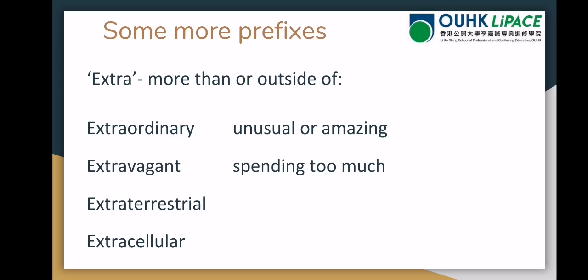Next we have extraterrestrial. This is a big word - it means outside of Earth. Normally we would use this to mean aliens or something like that, but it can mean anything outside of our planet. And lastly, like I said, extracellular is very common in biology. It means outside of the cell, and you will hear lots of similar words to this in biology.